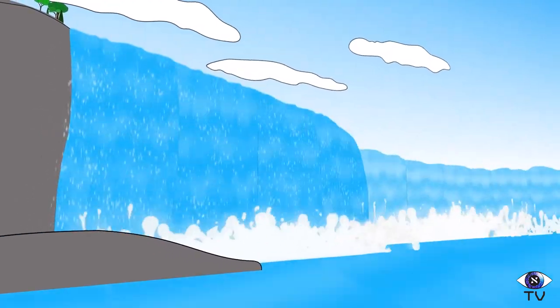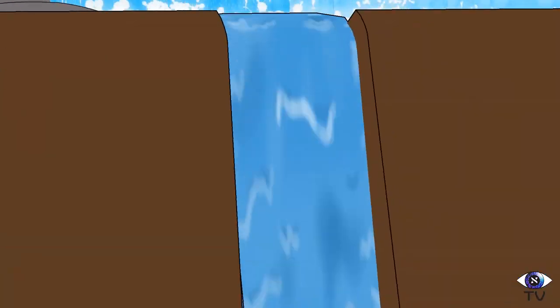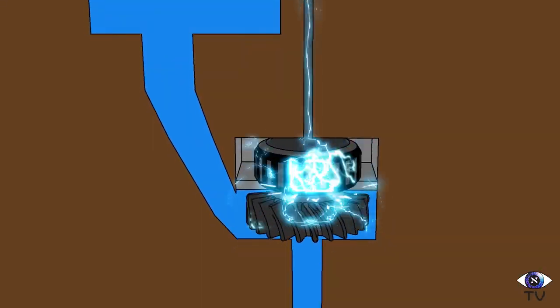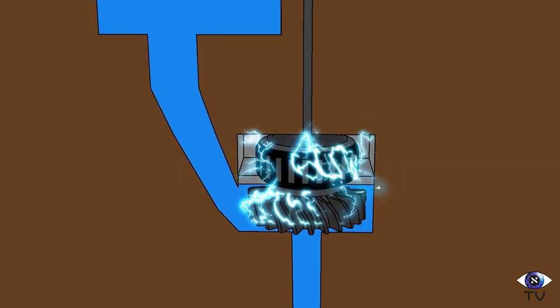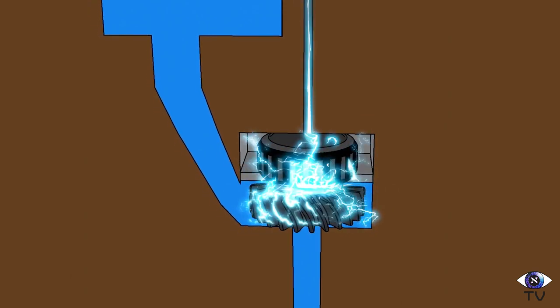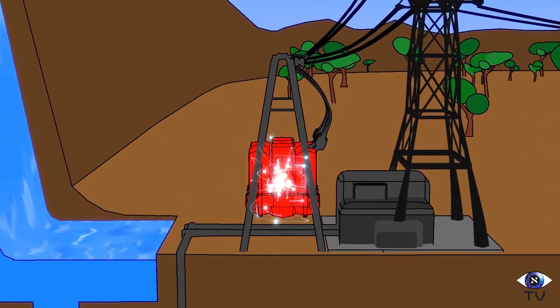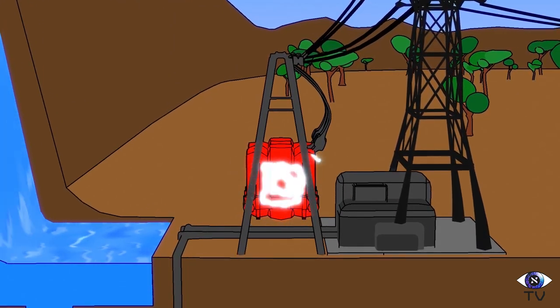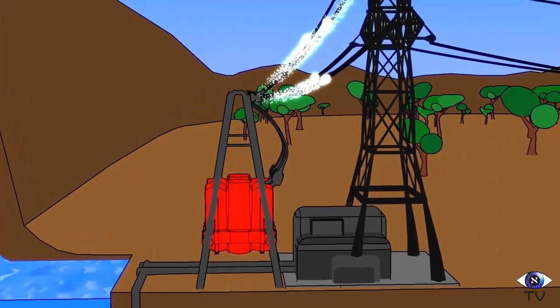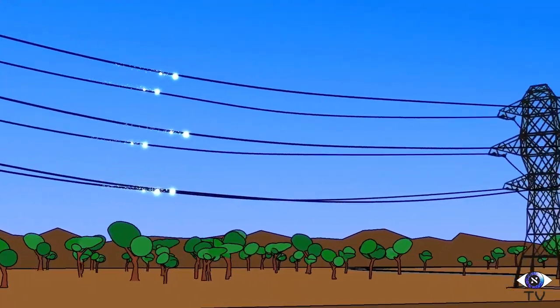Imagine electricity. You have a turbine under Niagara Falls, harnessing tons of water and turning it into electrical energy. But the voltage is too high, so when the electricity comes into your city, it first needs to go through a transformer to lower the voltage so that it doesn't blow out the power lines.